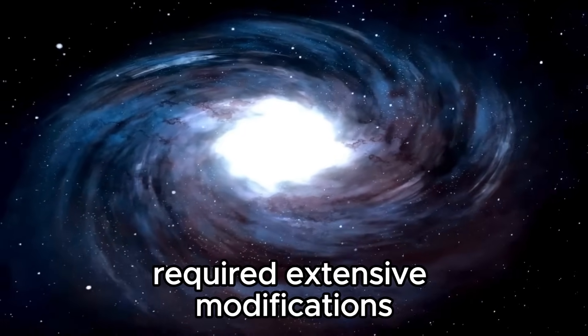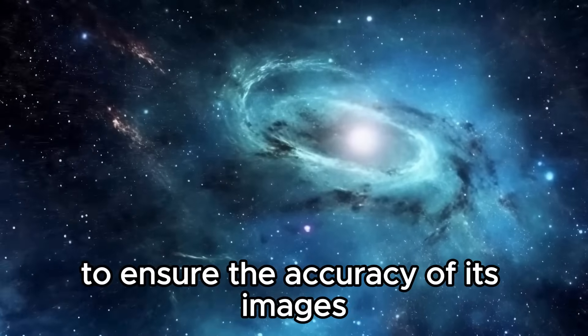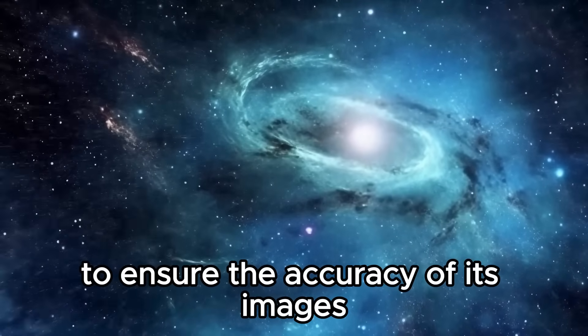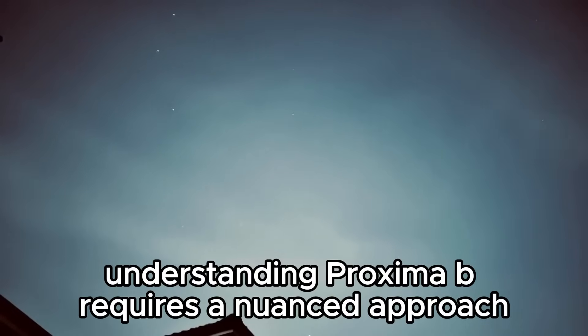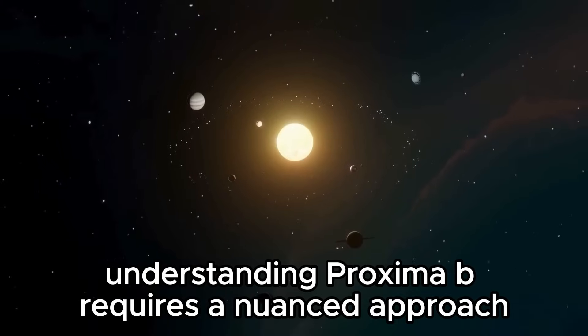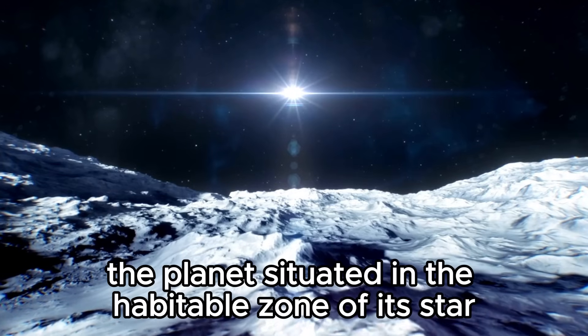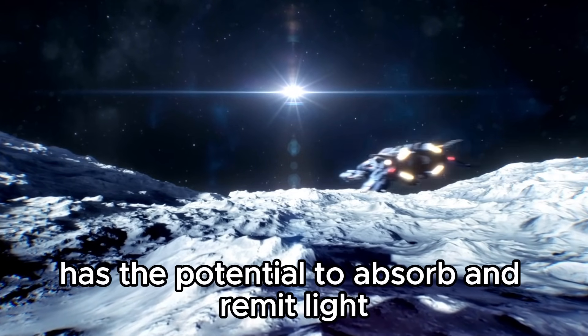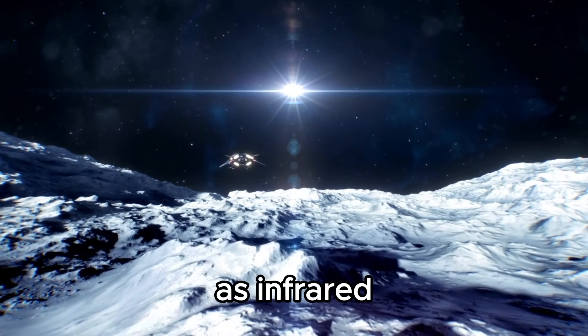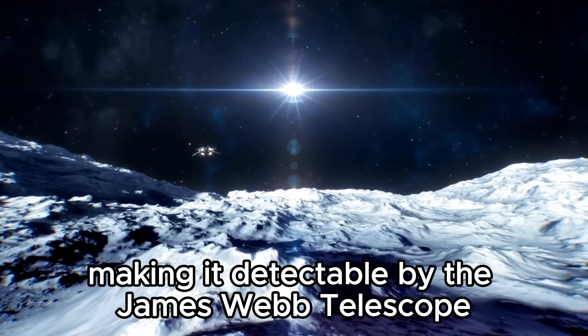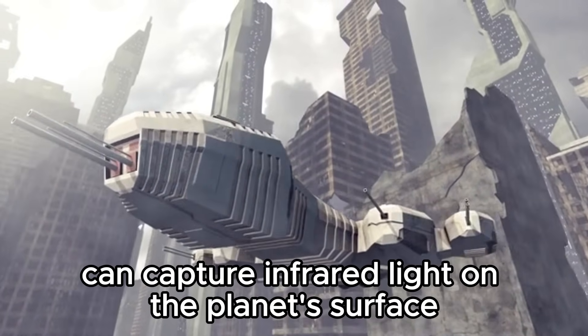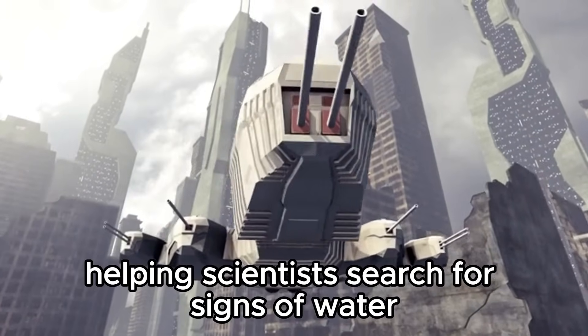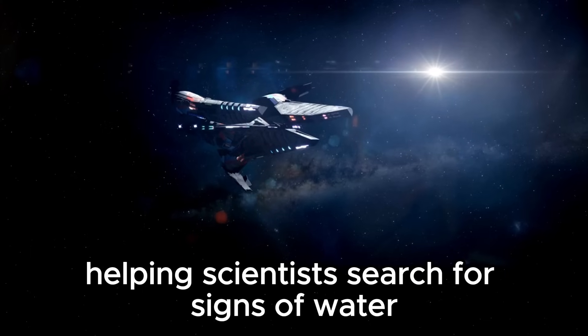The James Webb Telescope required extensive modifications to ensure the accuracy of its images. According to Aziz Kirk, a prominent theoretical physicist at Harvard, understanding Proxima b requires a nuanced approach. The planet, situated in the habitable zone of its star, has the potential to absorb and re-emit light as infrared, making it detectable by the James Webb Telescope. This powerful instrument can capture infrared light on the planet's surface, helping scientists search for signs of water or an atmosphere.